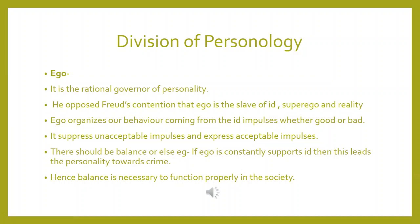Now regarding the ego — Murray describes it as the rational governor of personality. He opposed Freud's idea that ego is a slave of the id, superego, and reality. According to Murray, the ego organizes behavior arising from id impulses, whether good or bad — it suppresses unacceptable impulses and expresses acceptable ones. Balance is necessary in how the ego governs the id, because if the ego constantly supports the id, it can lead the personality toward harmful behavior.